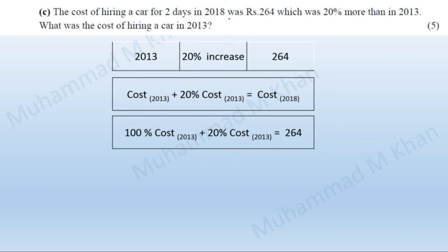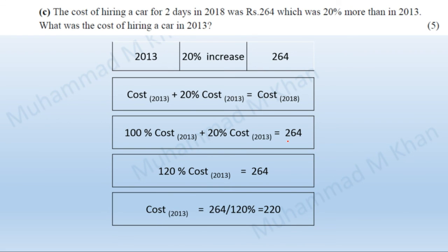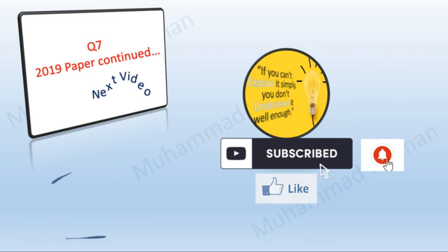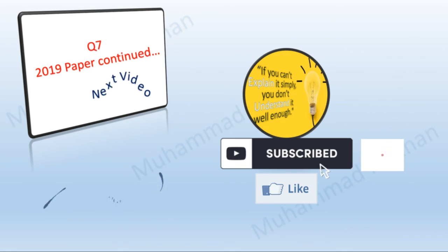Solving mathematically: 120% of the cost of 2013 equals 264. Dividing 264 by 1.2 gives 220. So the cost in 2013 was 220. This was all from my side — thank you very much for your patience. In my next video I will continue the solution of the 2019 paper and solve question 7.